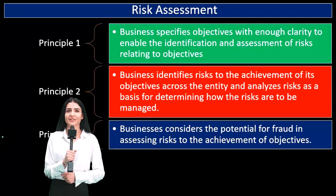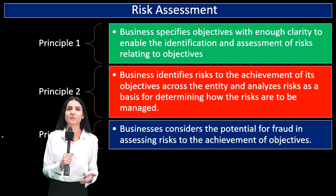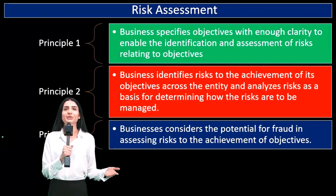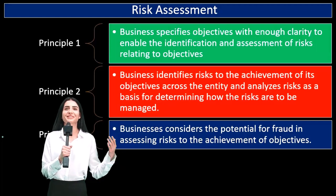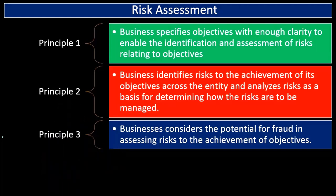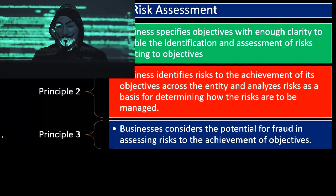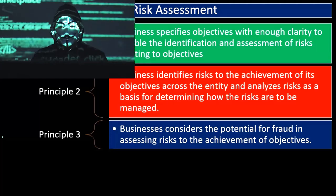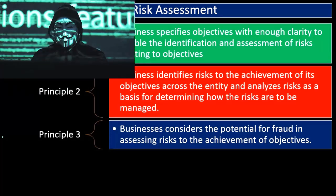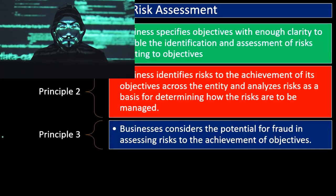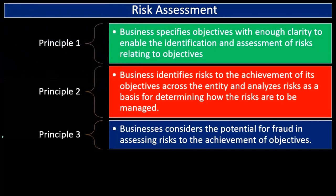Principle three: the business considers the potential for fraud in assessing risks to the achievement of objectives. We want to set up an environment within the organization to lessen the likelihood of fraud as part of our internal controls. First we identify the fraud risks — some will apply to any type of organization, some will be specific to the particular organization — and then we address where those fraud risks are.